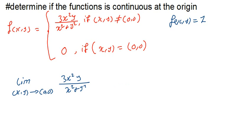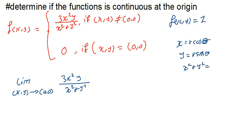Using polar equations is much more convenient. I just remember that x = r cos θ, y = r sin θ, and x² + y² = r². So it's just a matter of substituting. Taking the limit as (x, y) approaches (0, 0), I substitute: the numerator becomes r² cos²θ · r sin θ, and the denominator becomes r².